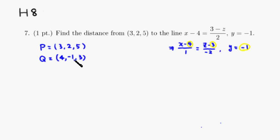All right, so from here we can create a vector PQ. So we're going to have 4 minus 3 is 1, negative 1 minus 2 is negative 3.